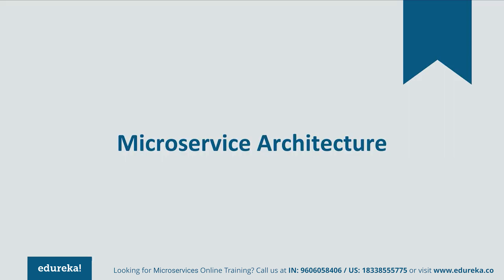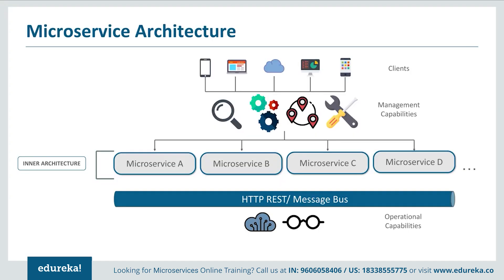Let's look at the components of microservice architecture. The architecture starts with different clients from different devices trying to perform different management capabilities such as build, search, notification, and so on. Each functionality is segregated into separate microservices handling their own data — microservice A for search, microservice B for build, microservice C for notification, and so on. All individual microservices have their own load balancing and execution environments. They communicate within themselves through REST or message bus to perform operational capabilities such as automation and monitoring. Client requests are passed to the internal architecture through an API gateway.